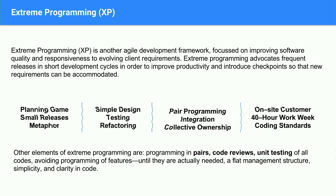Extreme programming is a lesser-used framework in the Drupal ecosystem. It is another agile development framework focused more on software quality and responsiveness. It is a code-fast approach where code is in the forefront, and testing is also at the forefront. It uses software engineering methodologies like test-driven development extensively. Other elements include pair programming, continuous integration, collective ownership, and several other things we'll discuss in the next few slides.